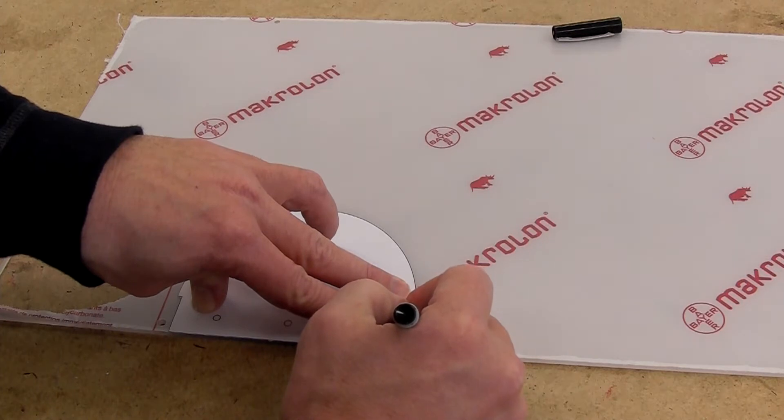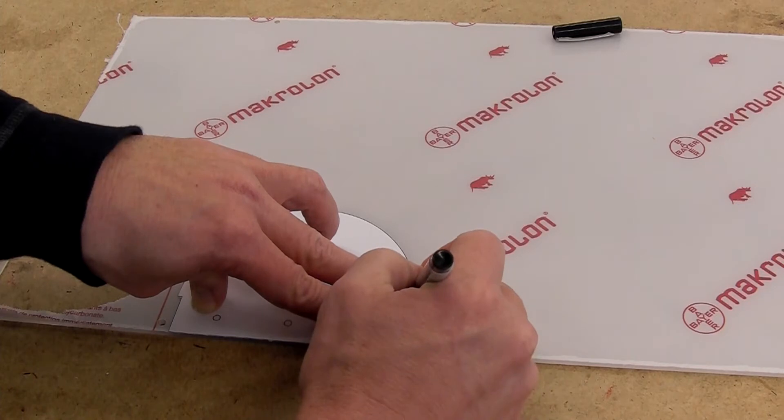First, we may cut out a paper template and mark the surface of the plastic. Note that we're leaving the skin on both sides of the plastic, which will help protect it from scratches.